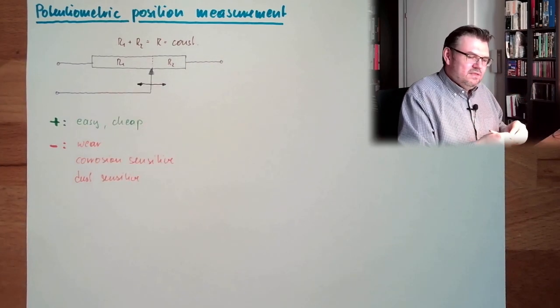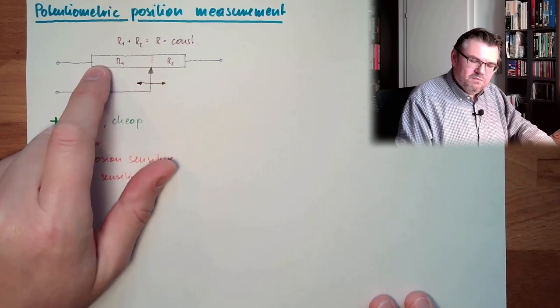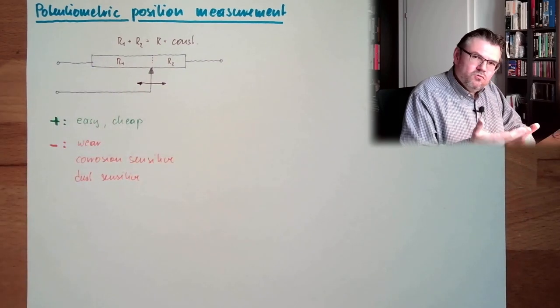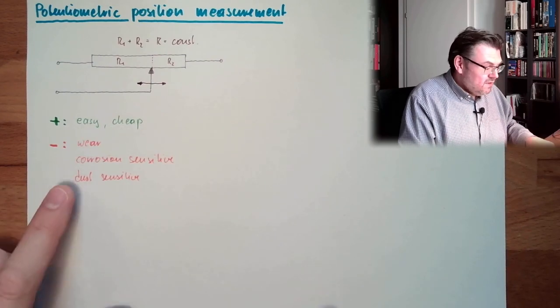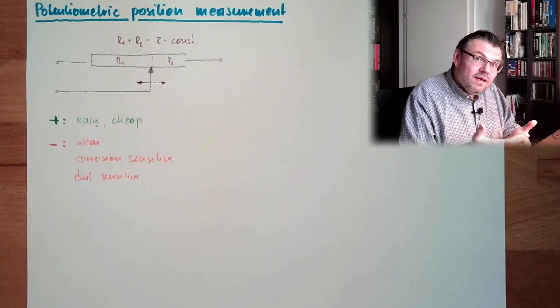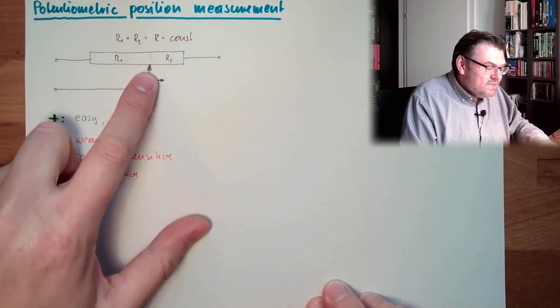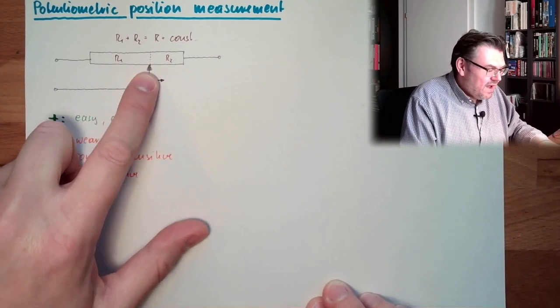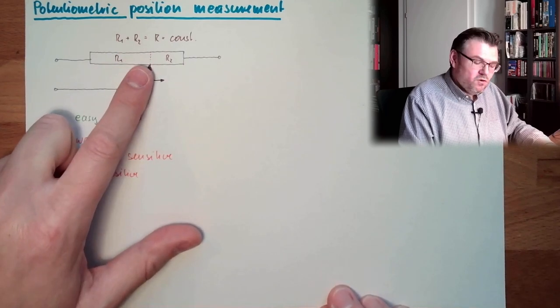If you cover this material with some dust, then the slider is not really touching the material, but the dust or the rust, the corrosion, and so on. So you will have here a resistance between the slider and this material. And this will directly influence your measurement.